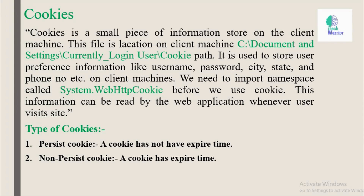A cookie is a small piece of information stored on the client machine. This file is located on the client machine. The path is in the C drive, under Documents and Settings, slash the currently logged-in user, slash Cookies. It is used to store user preference information like username, password, city, state, phone number, and more things stored on the client machine.